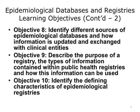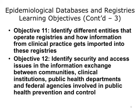8. Identify different sources of epidemiological databases and how information is updated and exchanged with clinical entities. 9. Describe the purpose of a registry, the types of information contained within public health registries, and how this information can be used. 10. Identify the defining characteristics of epidemiological registries. 11. Identify different entities that operate registries and how information from clinical practice gets imported into these registries. 12. Identify security and access issues in the information exchange between communities, clinical institutions, public health departments, and federal agencies involved in public health prevention and control.